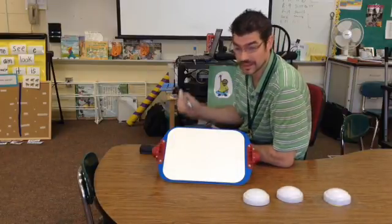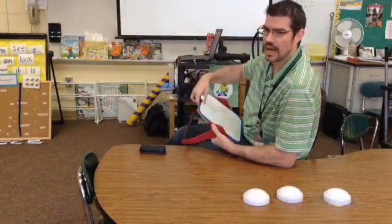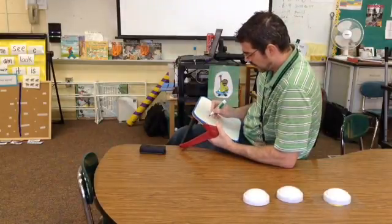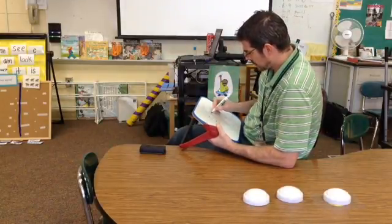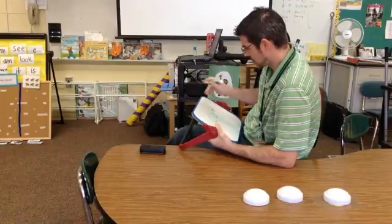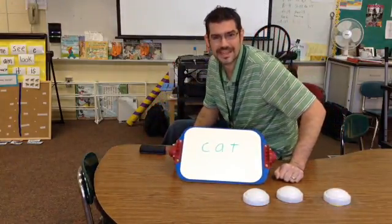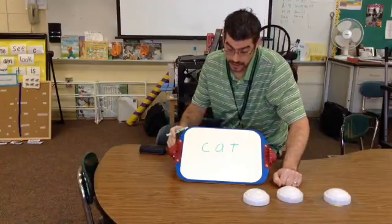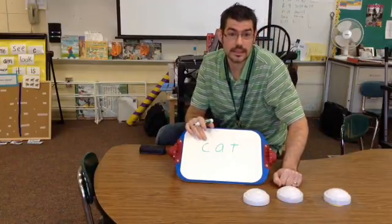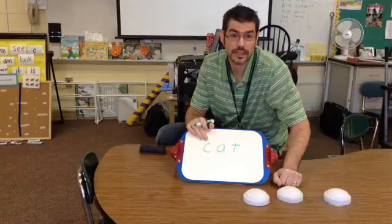The first word we're going to work with is a word that I like to start with, and the word is this word. Okay, so how do we sound this out? Well, we know our letters, and we know that the C, which is Clever Cat, makes a K sound.